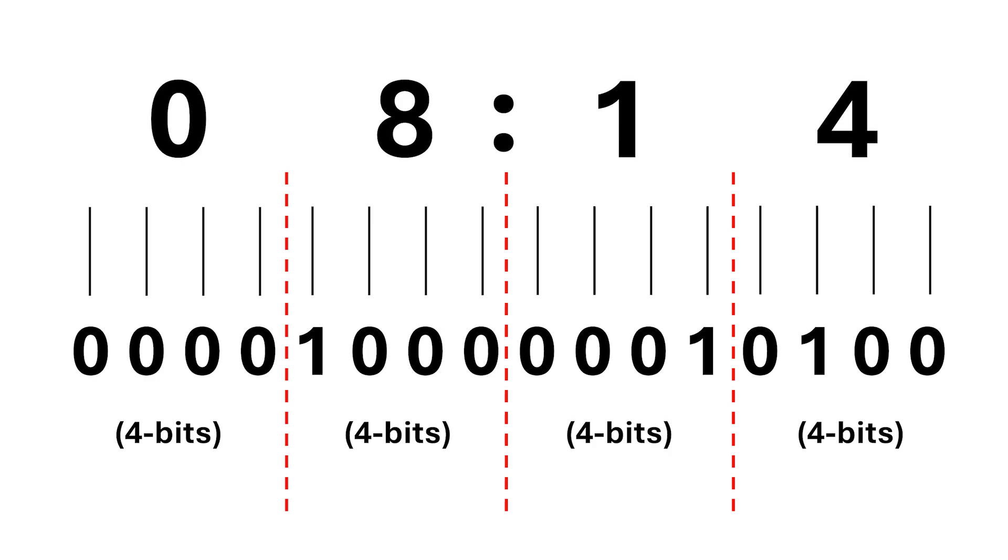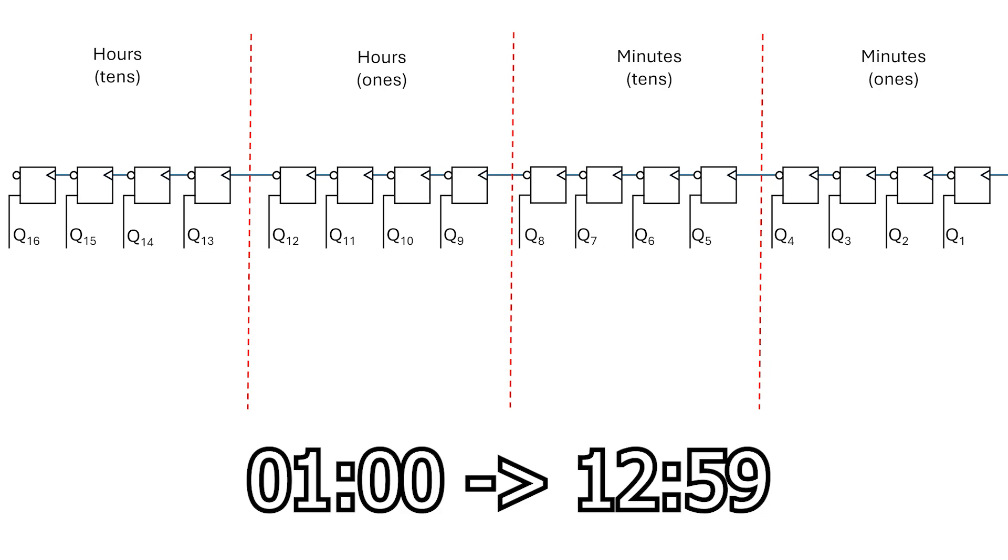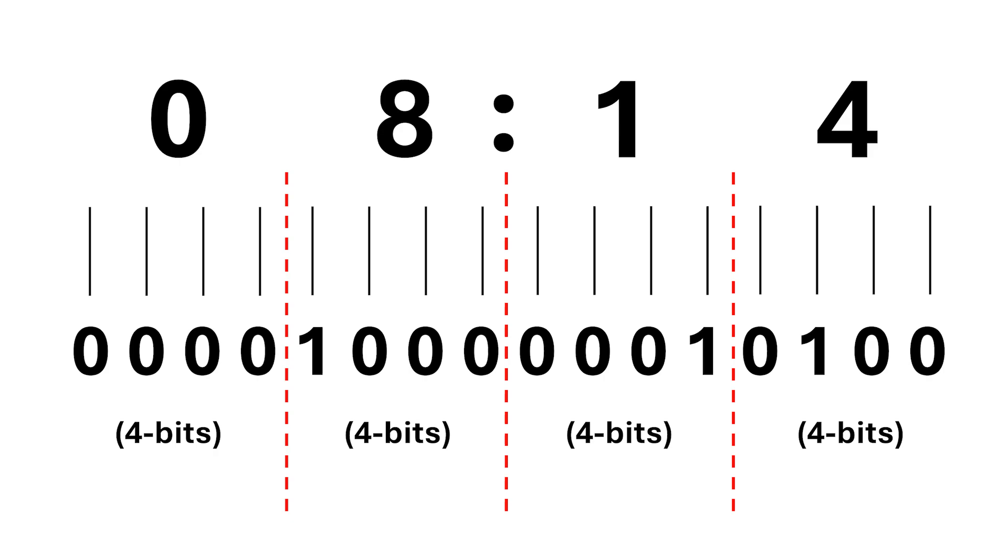OK, so I have 16 bits, so now I'll need a 16 flip-flop wide ripple counter. But, I want the time to go from 0, 1, 0, 0 to 12, 59, like most digital clocks, so I know that the leftmost digit can only be either a 0 or a 1. I only need one bit to represent this, so I can chop off three bits immediately, leaving only 13 flip-flops.